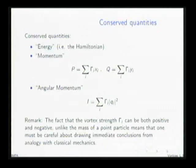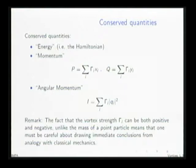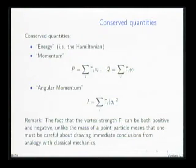The analog of the momentum is these quantities in the middle, and an analog of the angular momentum is the sum of the strength of the vortex times the square of its displacement. One thing that causes significant differences in phenomenology vis-à-vis the n-body problem of celestial mechanics is that vortex strength plays the role of mass, and the fact that you can have both positive and negative vortices gives quite different phenomena than in the case of only positive masses.